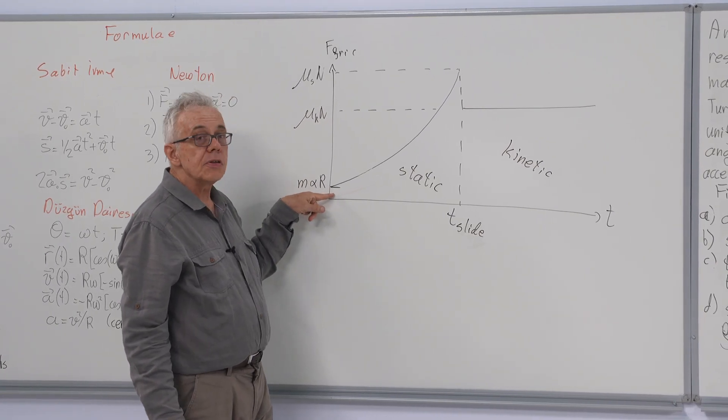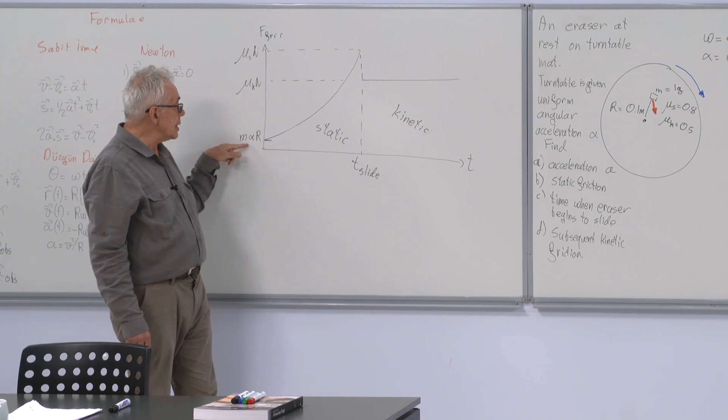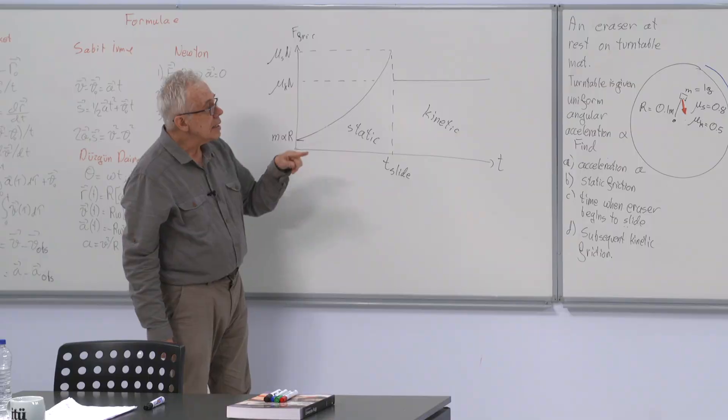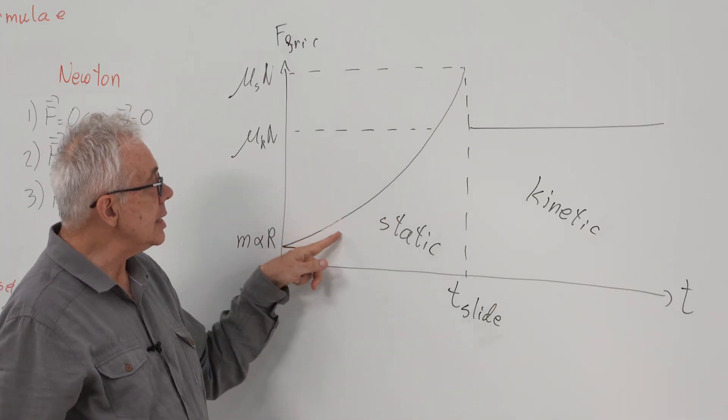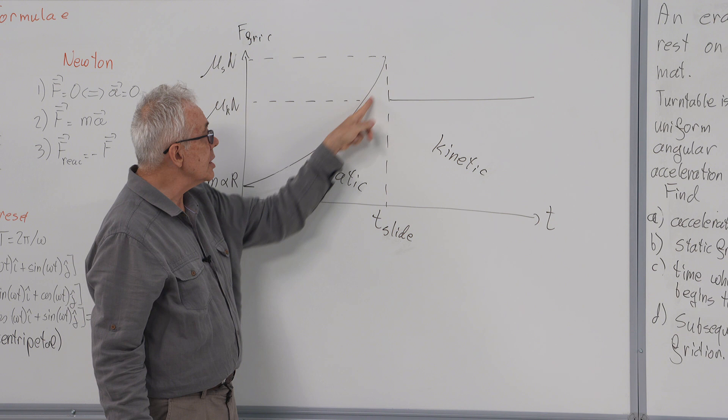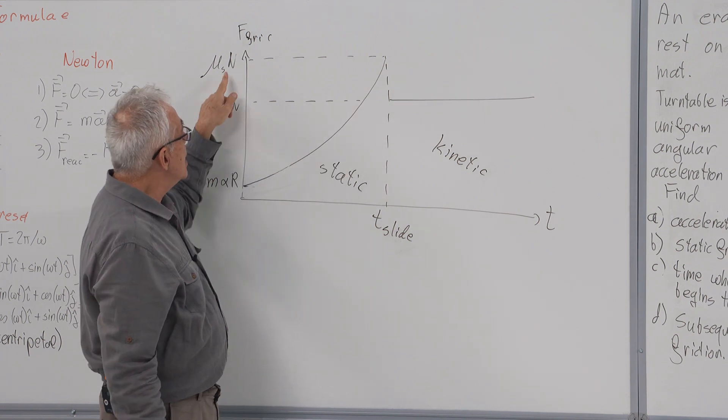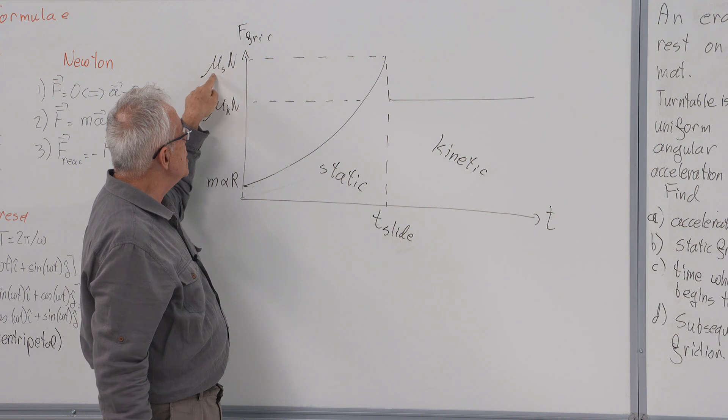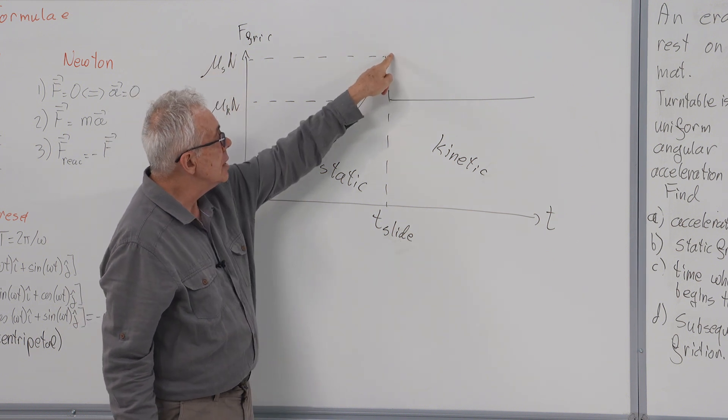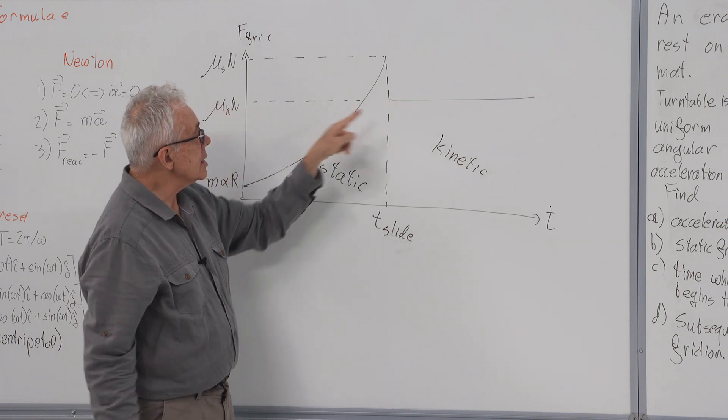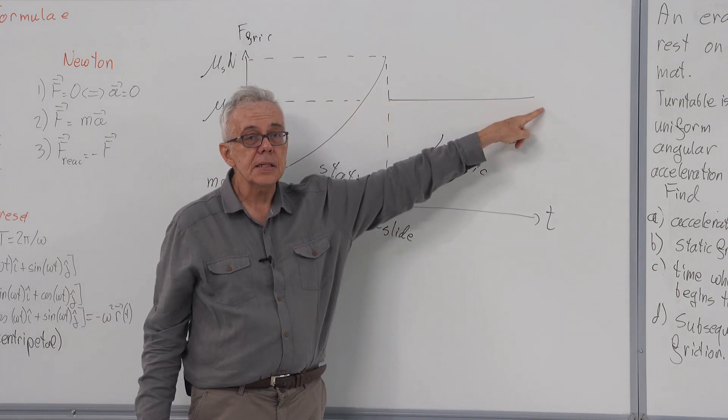If we look at the magnitude of the frictional force as a function of time, we will see that when we start the motion, the frictional force is providing the tangential acceleration. Then the centripetal acceleration increases parabolically in a quadratic fashion with time. It increases until it reaches mu times normal. Then, once the kinetics starts sliding, it is the kinetic friction.